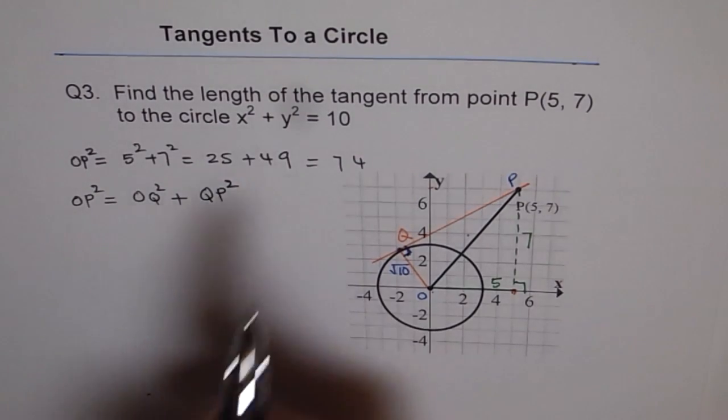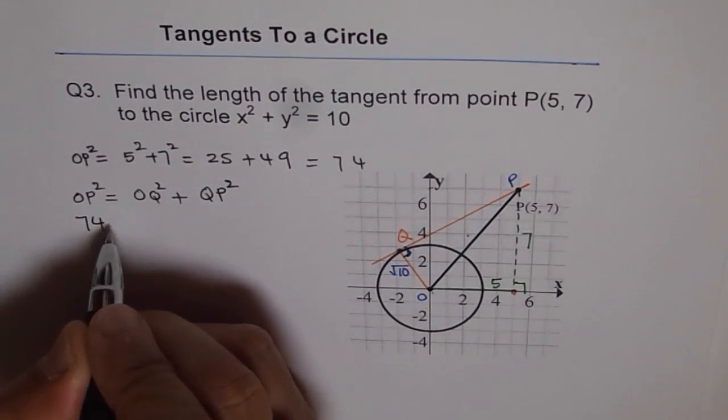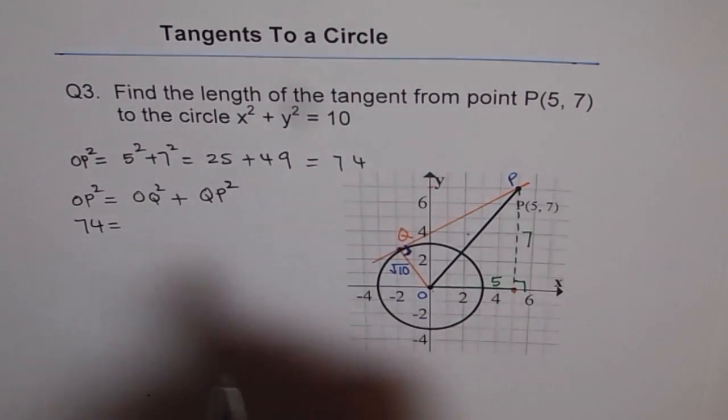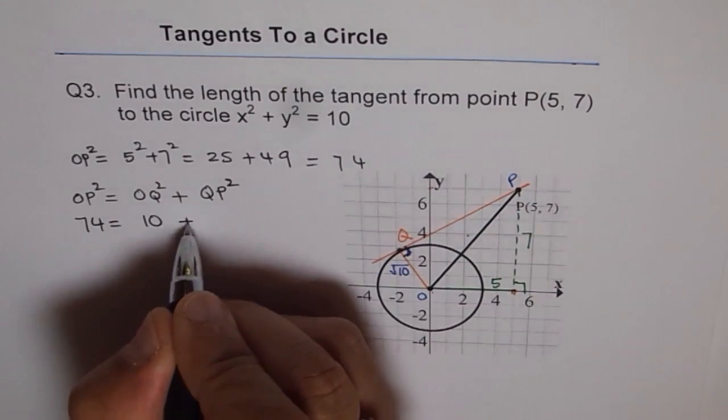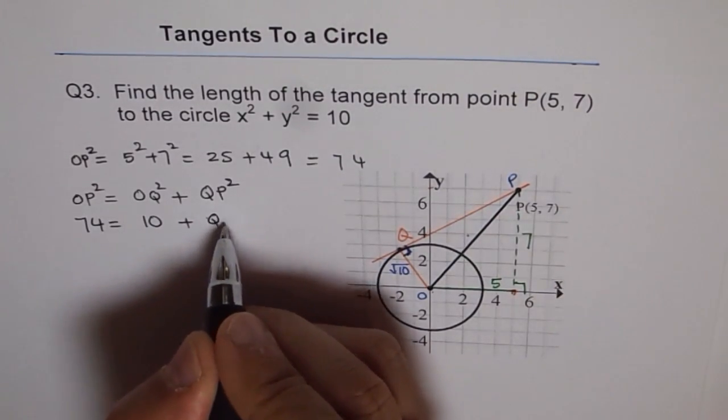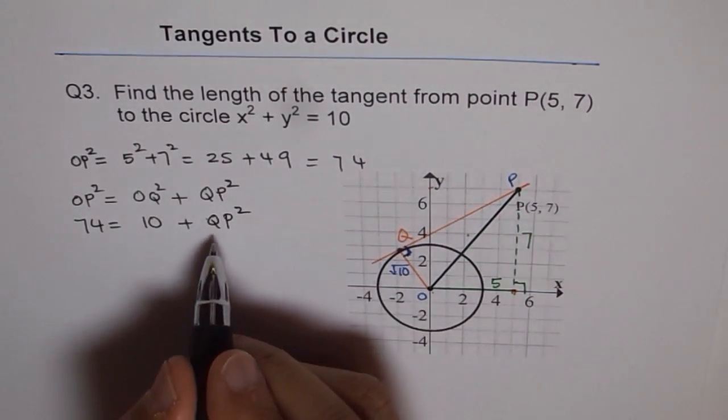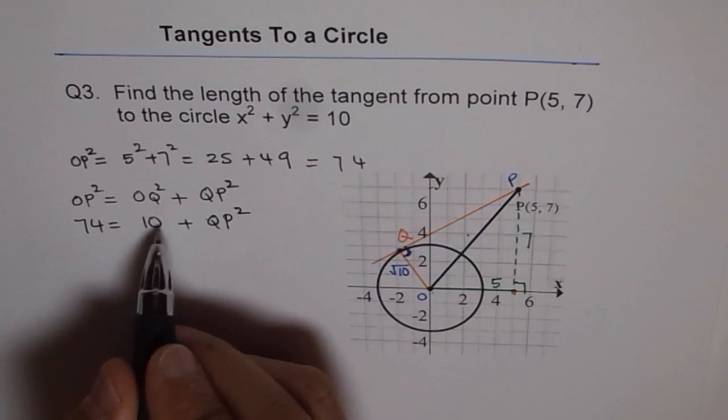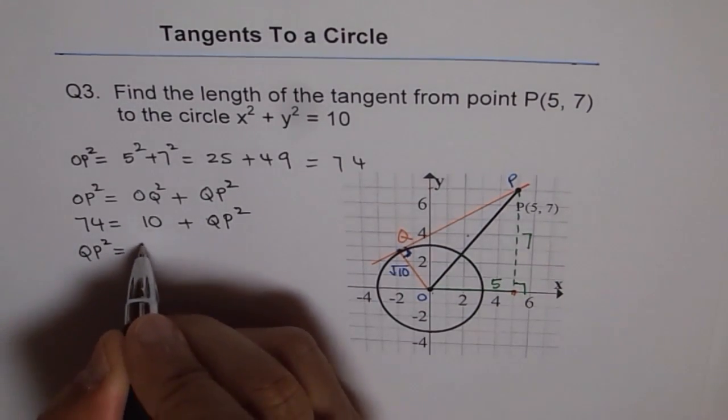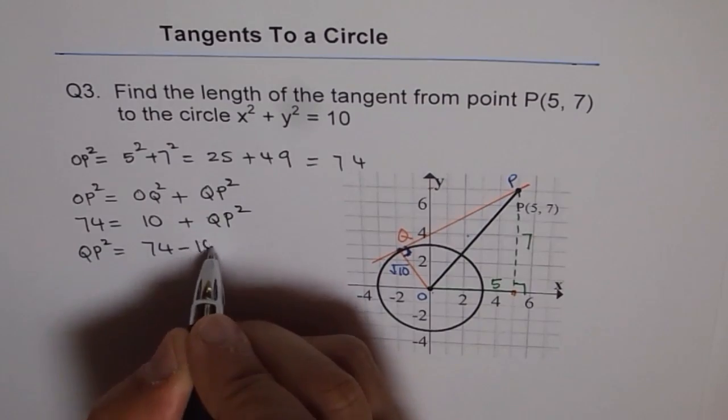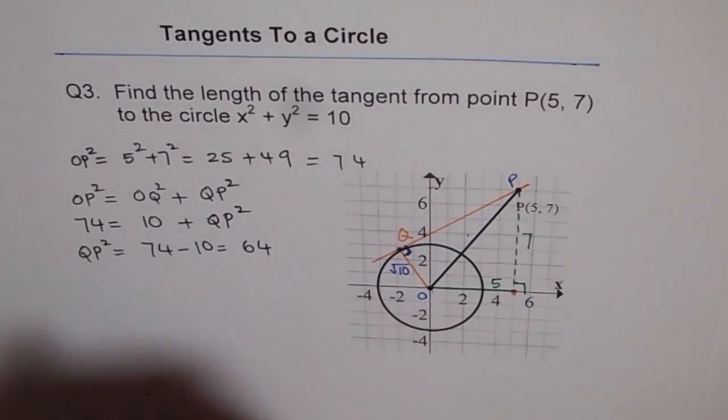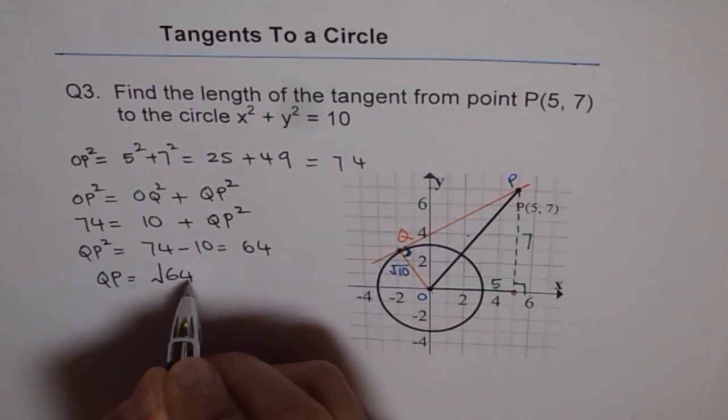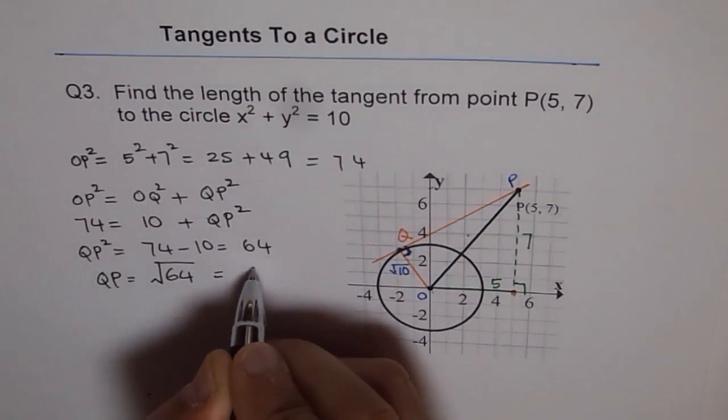Now, see, we know OP squared, which is 74. So we write 74 equals to OQ squared is 10. Square root of 10 squared is 10 plus QP squared. So from here we can find what QP squared is, which is 74 minus 10. So we write QP squared equals 74 minus 10, which is 64. And therefore, QP equals square root of 64 and that is 8.